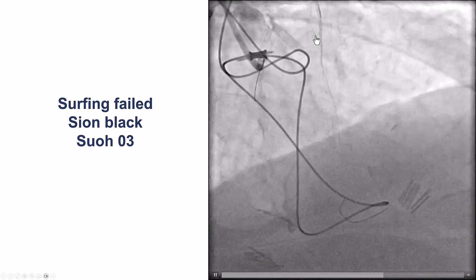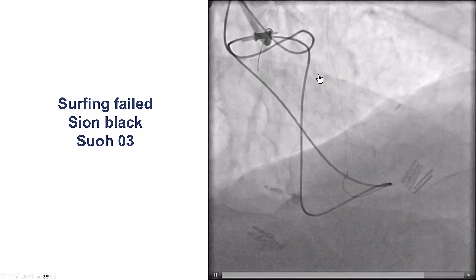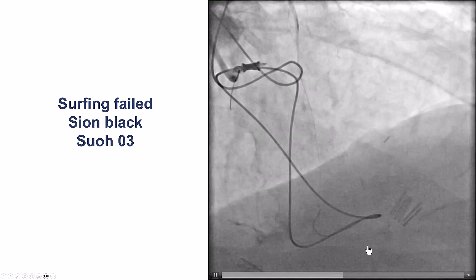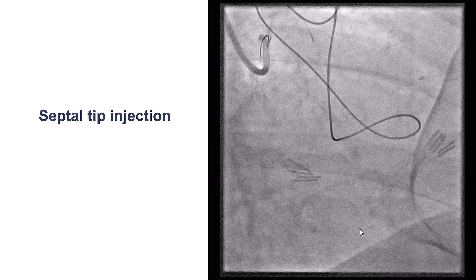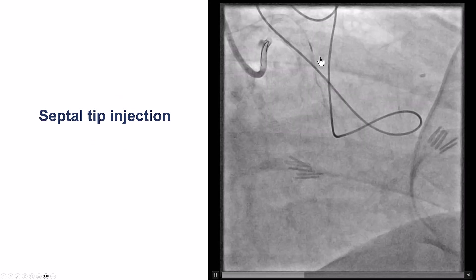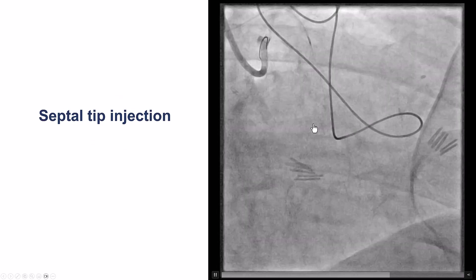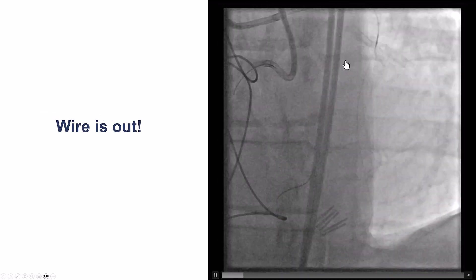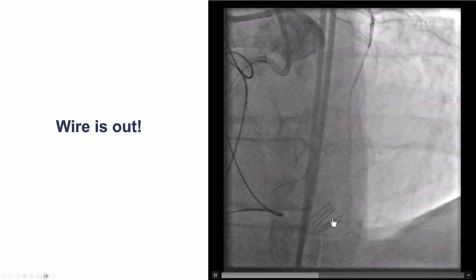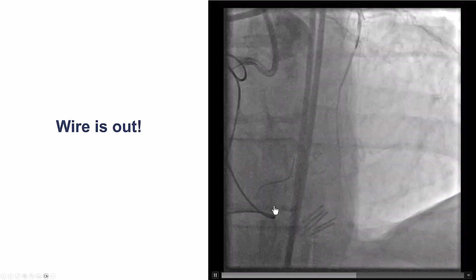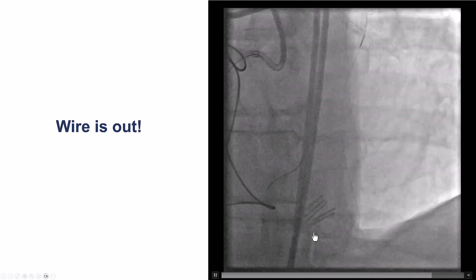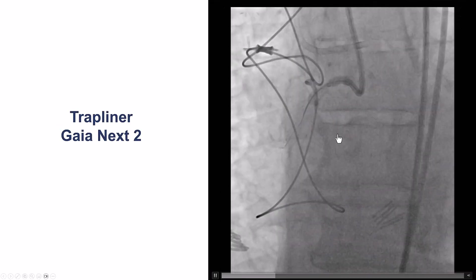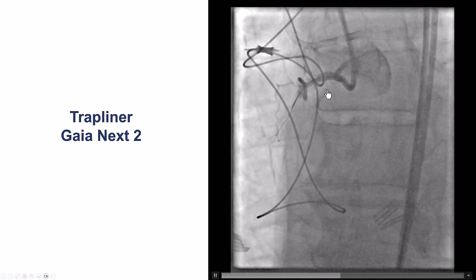We started to perform surfing through the first septal using a Sion Black 203, but there was not much progress. We did contrast injection to clarify the course of the collateral and then tried again, but the guide wire was actually going outside the coronary. So we were unable to cross retrograde, and then we decided to go antegrade.